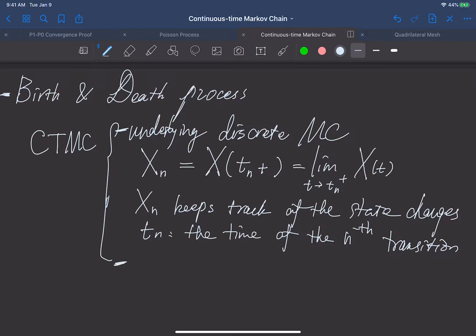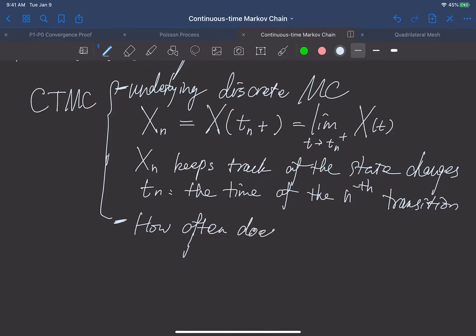The second component is the holding time. We'll say how often does X sub t leave state i. And this we know that normally we assume this one as an exponential distribution, which is of this rate ν sub i.